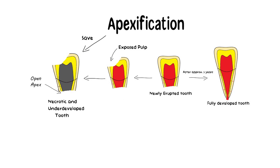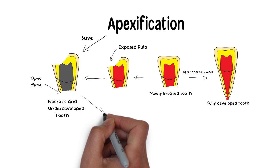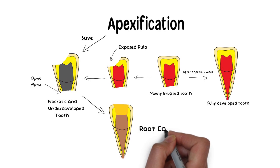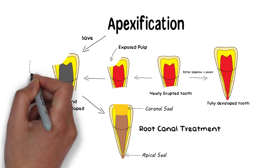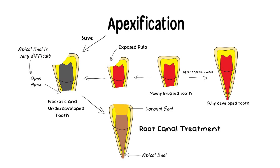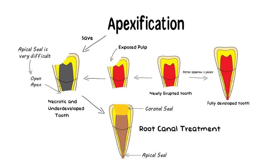This tooth with an open apex and a necrosed pulp cannot be treated with just simple root canal treatment, because the two most crucial things for the success of a root canal treatment are the coronal and apical seal. With an open apex, apical seal is very difficult to achieve, and hence root canal treatment in these teeth is unpredictable and unreliable.